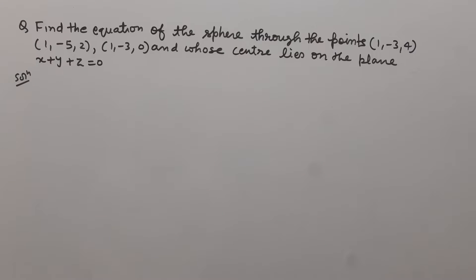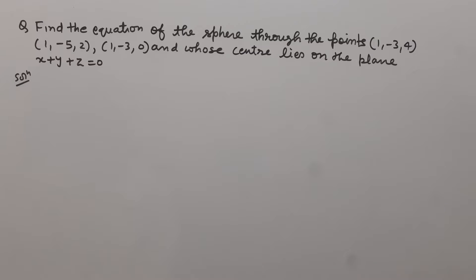This is the question. Find the equation of the sphere through the points (1, -3, 4), (1, -5, 2), (1, -3, 0), and whose center lies on the plane x + y + z = 0.